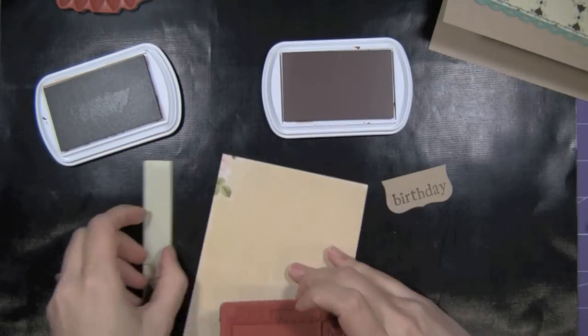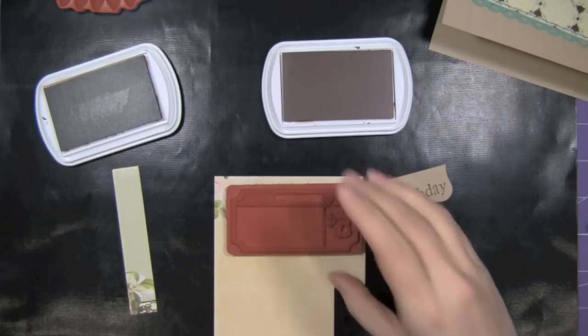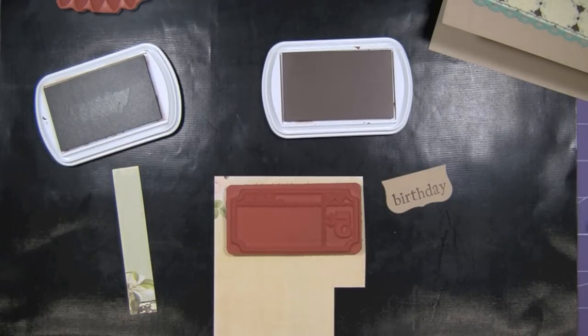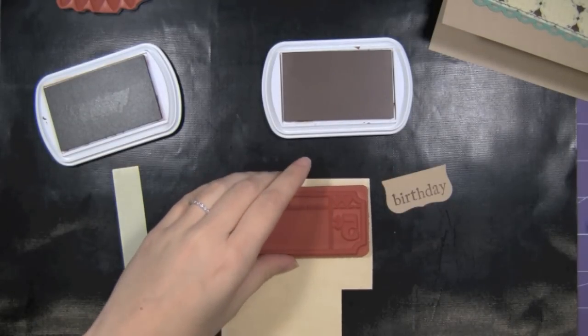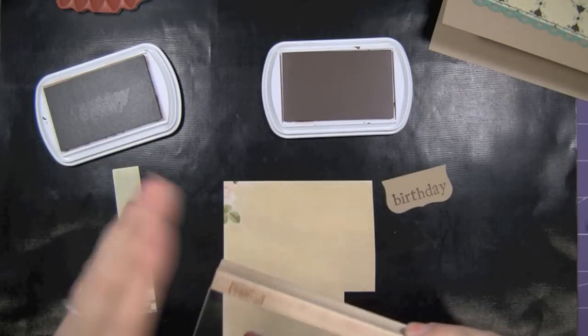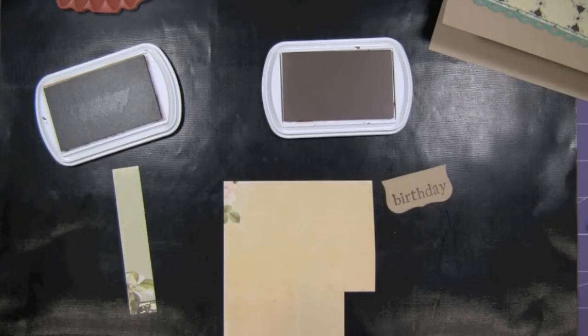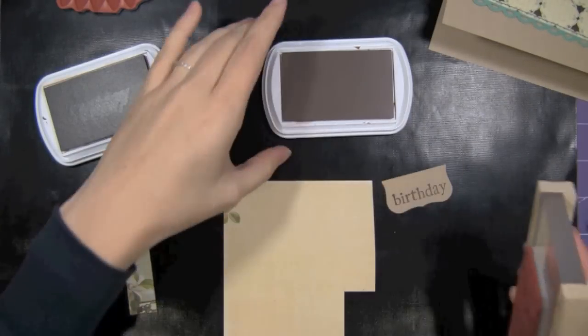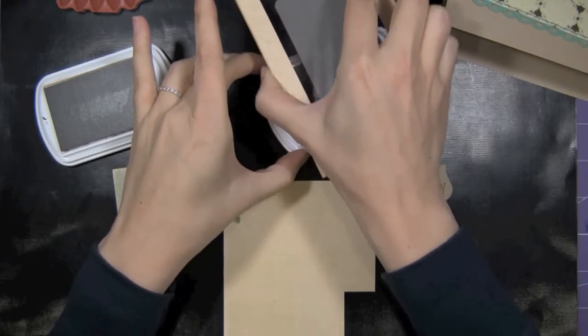I want to go ahead and stamp this ticket onto this cream colored paper. I think I'm going to need this. And I'm going to do that in this chestnut roan lighter brown.